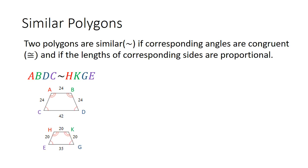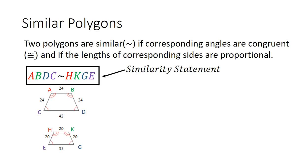Below, I have two polygons that are similar, and we have the similarity statement that ABDC is similar to HKGE. That is really important. The similarity statement tells us a lot about the two polygons — it gives us the corresponding angles.